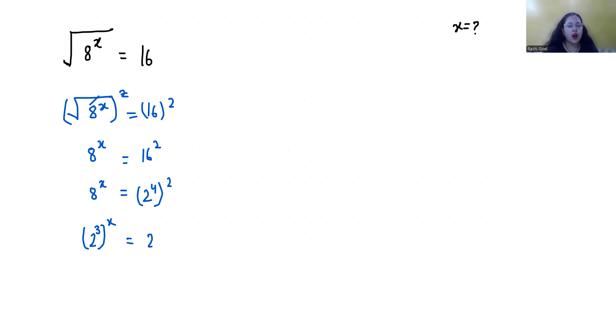According to exponent rule, x power m power n, we can write it as x power m times n. So it becomes 2 power 3x equals 2 power 8.